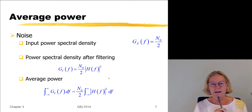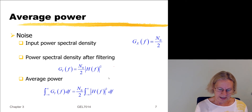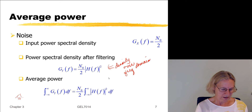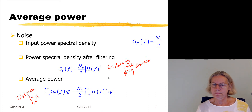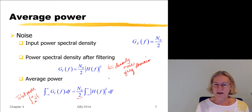We have the input power spectral density and the output power spectral density. To find the average noise power, we integrate over the power spectral density across all frequencies. Since N0 is a constant, it can go outside the integration, and basically we're looking at the area under the square of the frequency response of our filter. This gives us the average power of the noise.